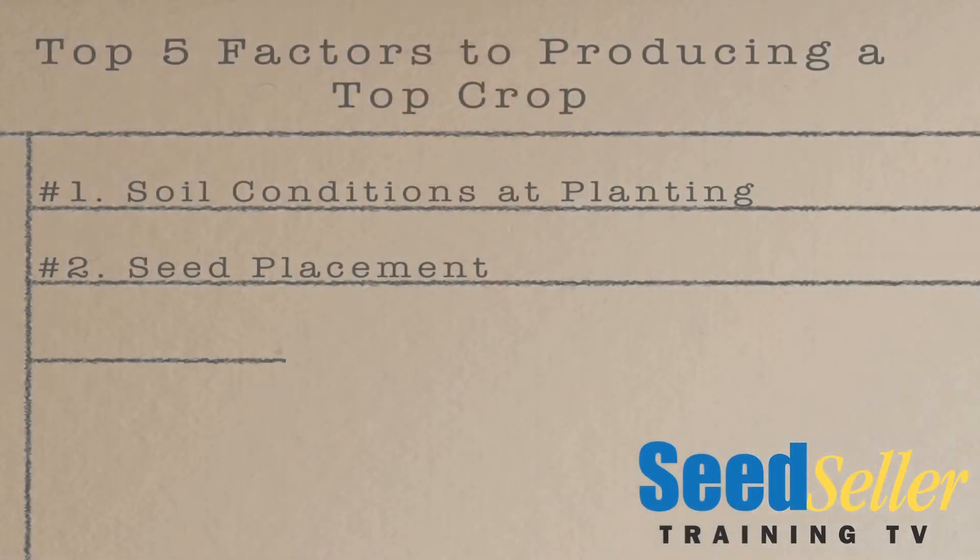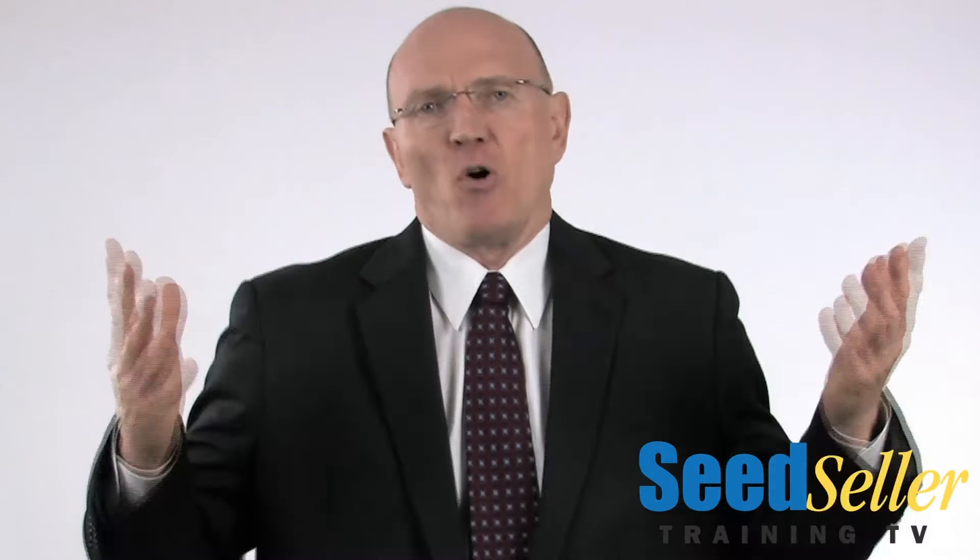Number three factor to producing a top crop is seed quality. This is where the seed company helps out the farmer by bringing him seed quality that's exceptional. Seed quality is more important than genetics — far more important than genetics. You give me an average genetic package with superior seed quality and I will beat your superior genetic package with average seed quality every single time. But what good is top seed quality if it's not placed in the soil properly and you have poor soil conditions?